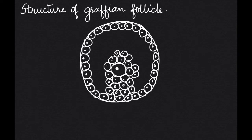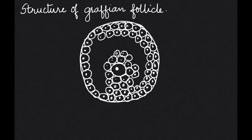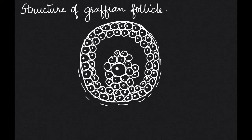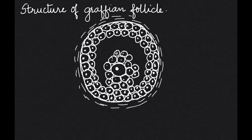Next, we form another layer of cells such that there is space or cavity in between them. This is the second row of cells. Once we finish drawing this row of cells, we start drawing the connective tissue layer outside. This way we can just put the lines here to make a connective tissue layer. This is called the theca.